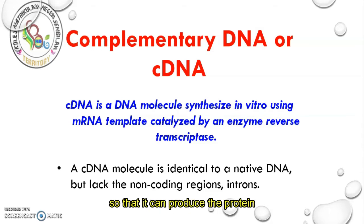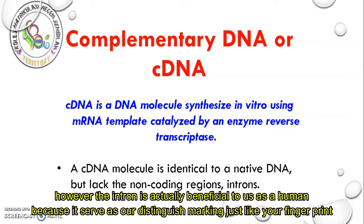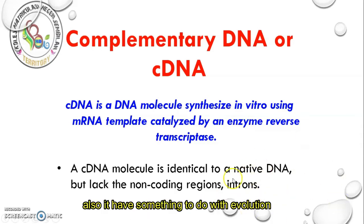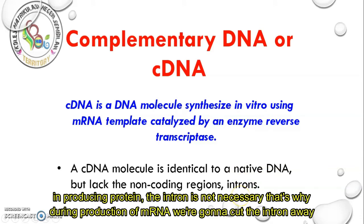After splicing, only the exon remains so that it can produce the protein. However, introns are actually beneficial to us as humans because they serve as a distinguishing marker — like your fingerprint. My introns are not the same as your introns, even though we are both human. Introns also have something to do with evolution. In producing protein, the intron is not necessary, which is why during production of mRNA, the intron is cut away.